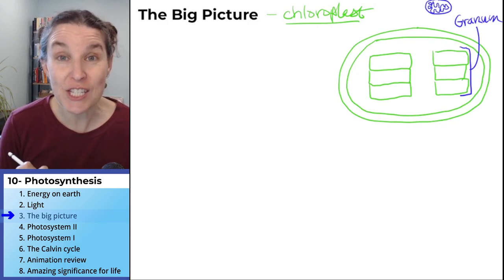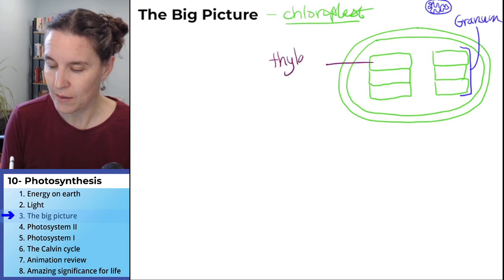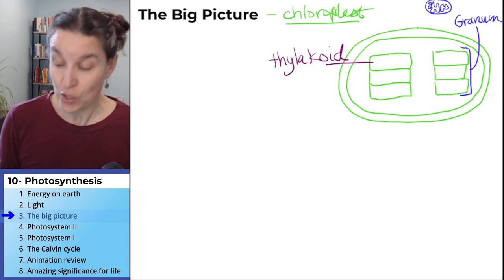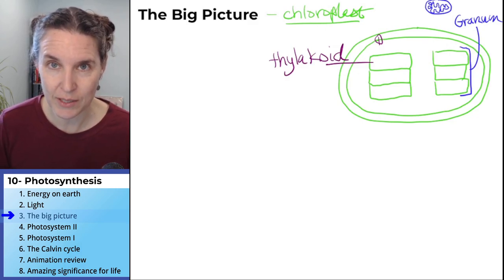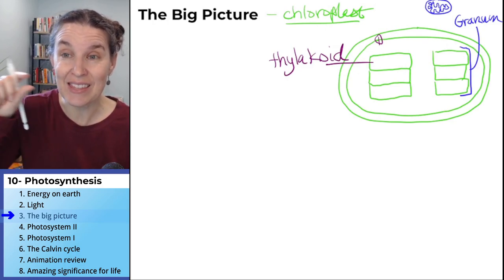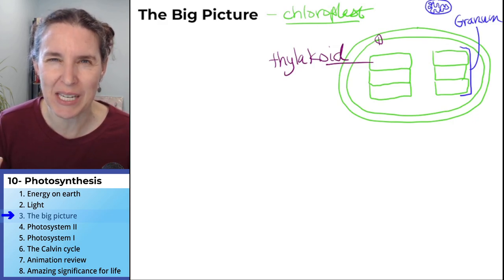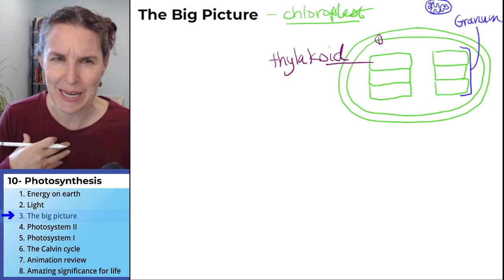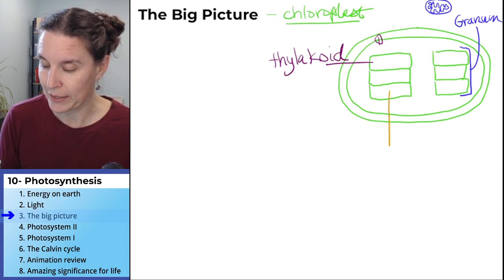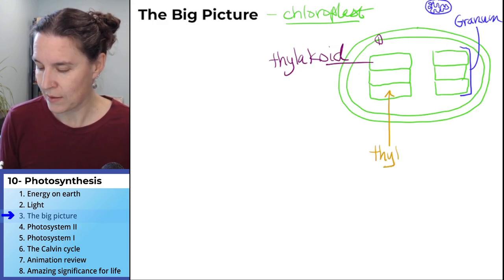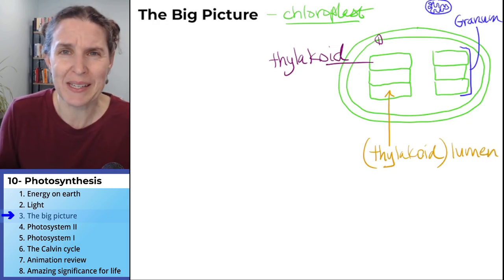And of course, each sack has a name. So each little individual sack is called a thylakoid. Granum number one has three thylakoids. Granum number two has three thylakoids. Each thylakoid is like a sack. It is a sack, and it has a space inside because all sacks have spaces inside. That's what makes them a sack. This sack space is called the thylakoid lumen. And I have words to say about this. I'm going to put that in parentheses because it really is just the lumen of the thylakoid.